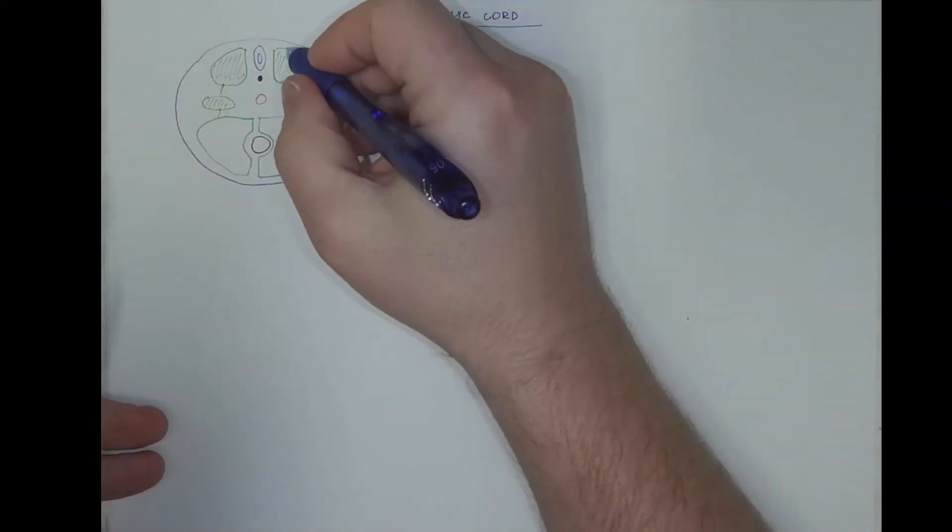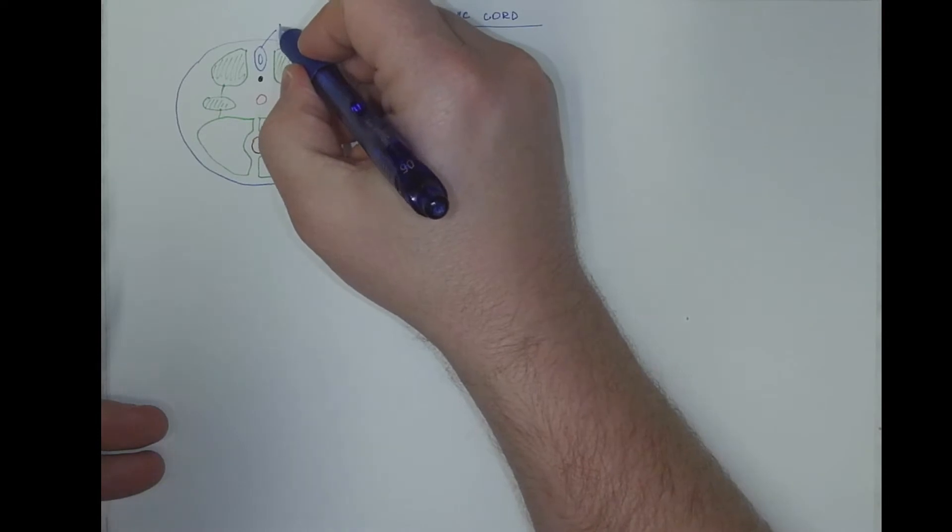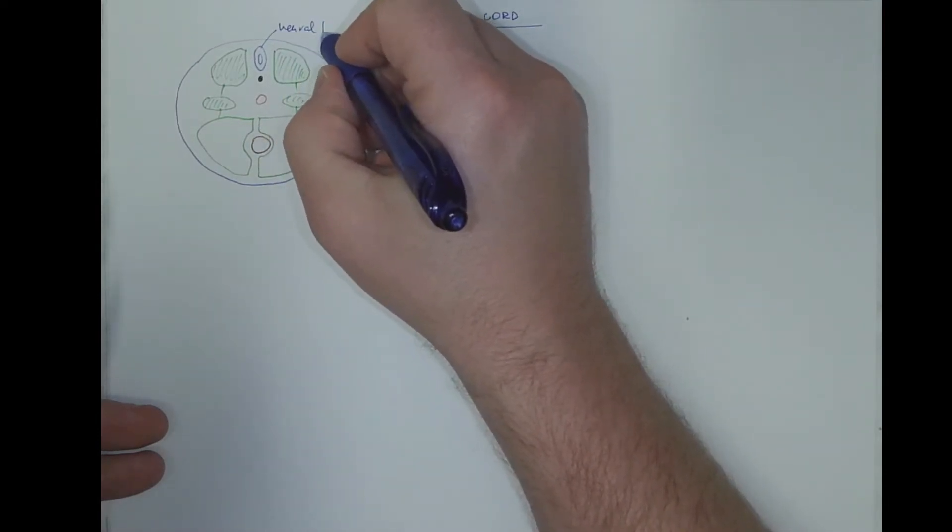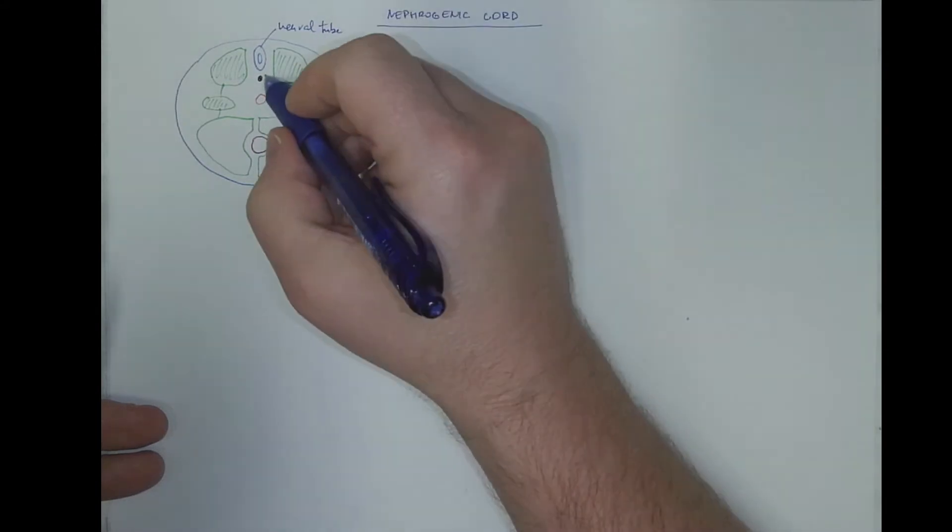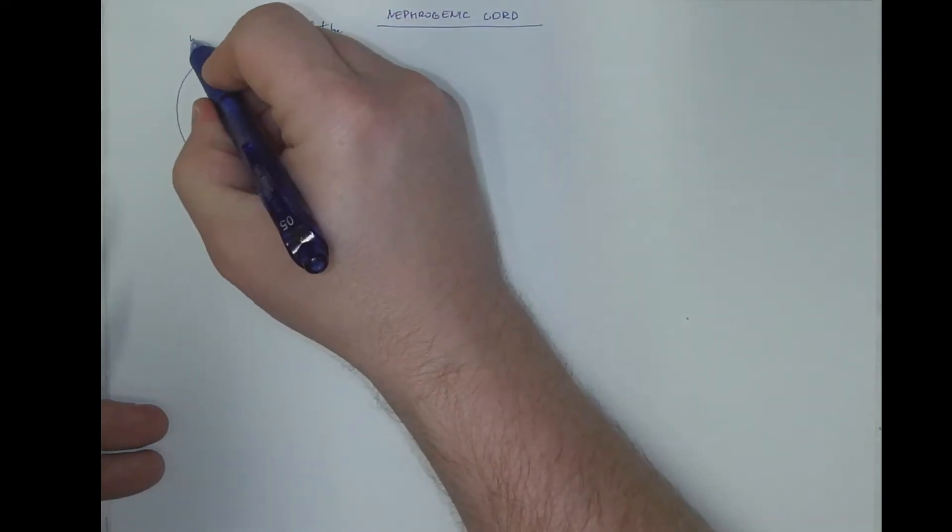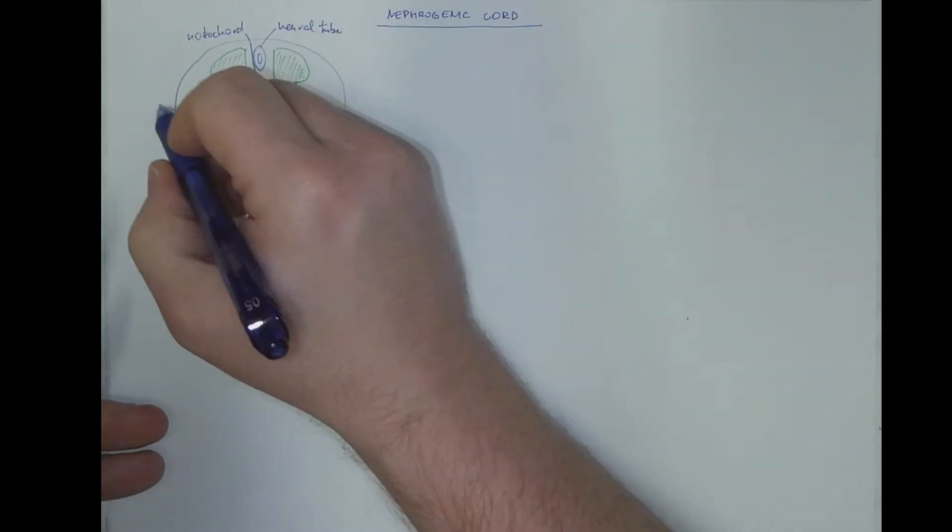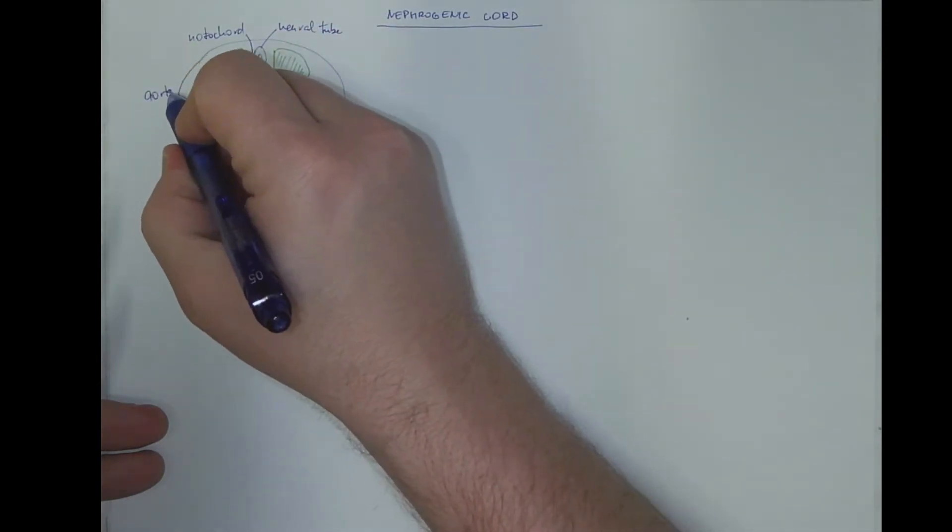So let's label the structures. This would be the neural tube or the spinal cord, that's the notochord, the dorsal aorta.